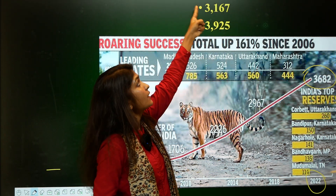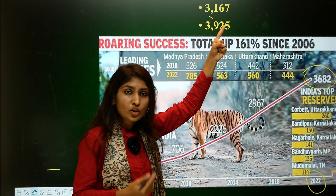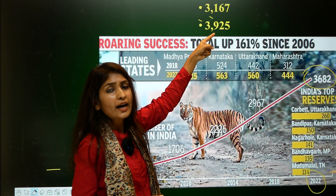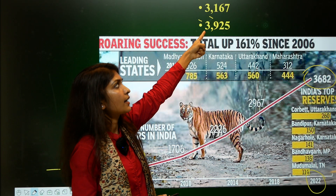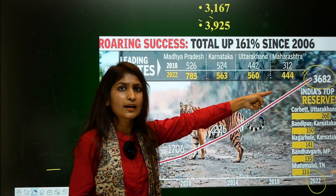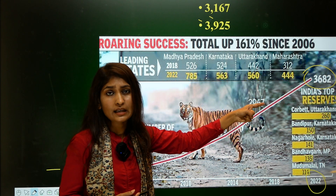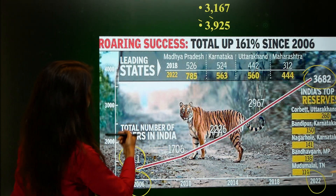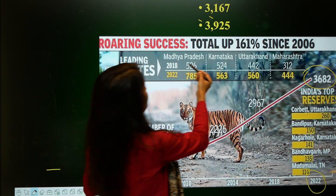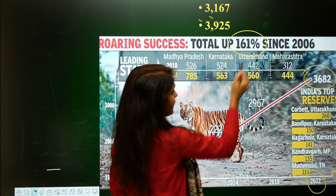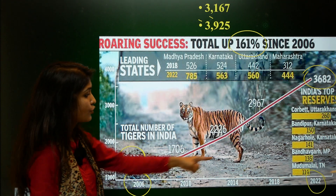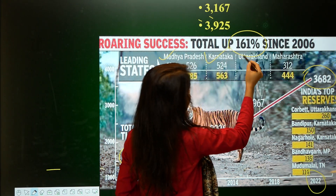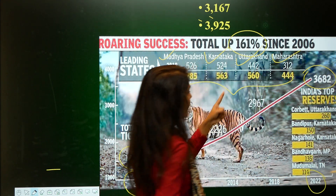India has achieved a total 161% increase in tiger population from 2006 to 2022 — growing from 1,400-plus to 3,682. The leading state in tiger population is Madhya Pradesh, followed by Karnataka, Uttarakhand, and Maharashtra. In terms of tiger reserves with the highest populations: Jim Corbett (Uttarakhand), Bandipur (Karnataka), Nagarhole (Karnataka), Bandhavgarh (Madhya Pradesh), and Mudumalai (Tamil Nadu).